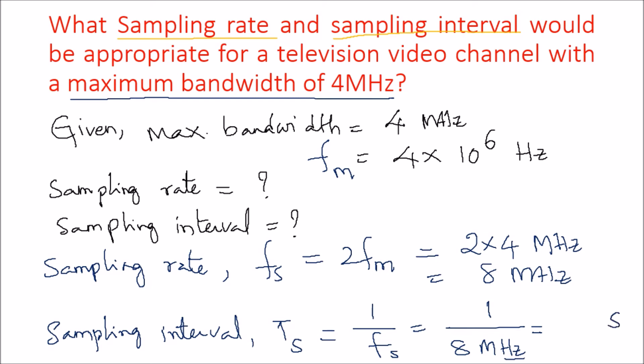Hertz in the denominator, if it comes to the numerator, will become seconds, because hertz is cycles per second. So that per second will be converted into seconds, and mega will be converted into micro.